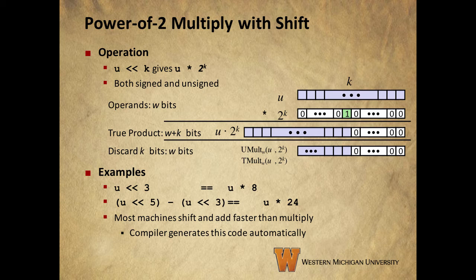We don't have to multiply by even numbers either. We could get u times 15 by shifting u by 4, which is 16u, and subtracting u from that yielding 15u.